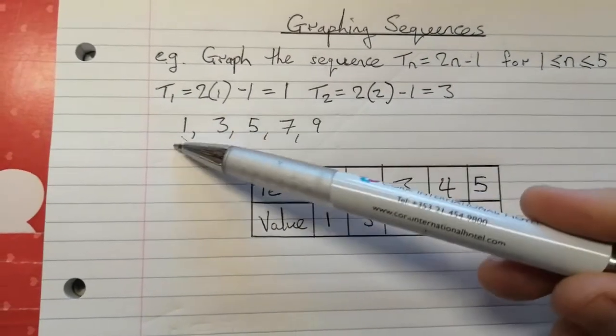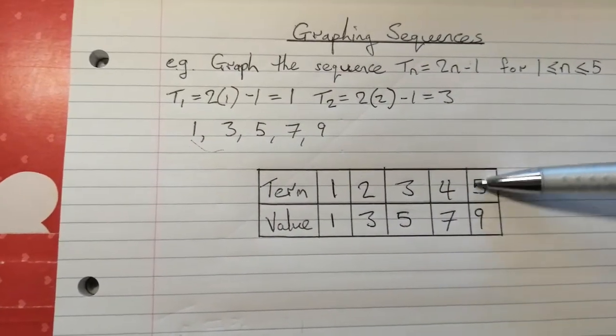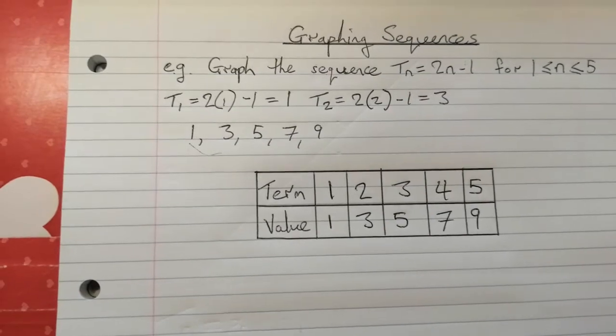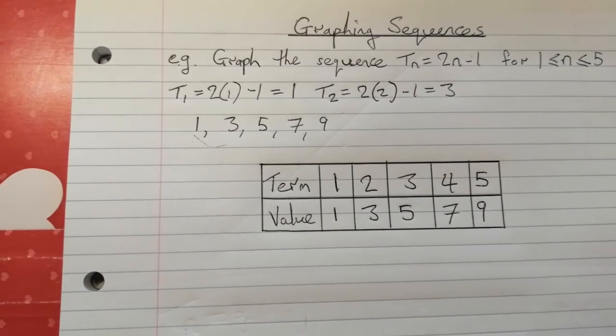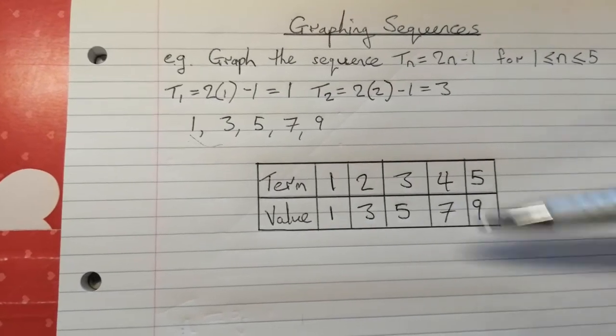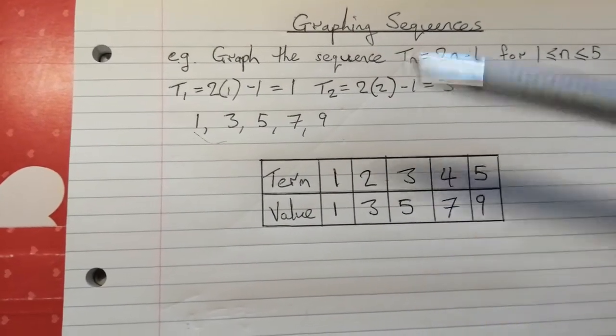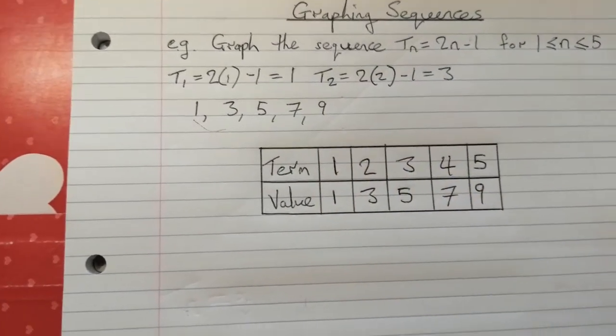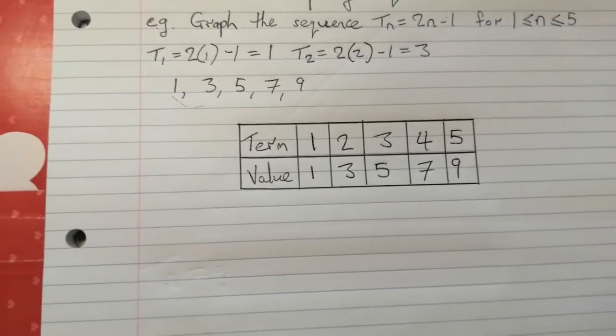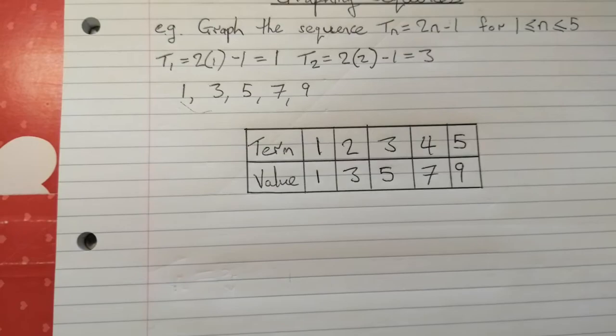So term 1 is 1, term 2 is 3, term 3 is 5, term 4 is 7, and term 5 is 9. So from this table now, I'm going to use this to draw the graph. In most questions, if they wanted you to draw the graph, they'd probably give you this table first without making you work out what the terms were. But just in case they didn't, we went through that step. So again, I'm going to pause there just to draw out a little bit of the graph, and then we'll plot the points together.